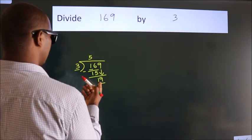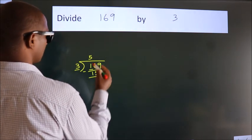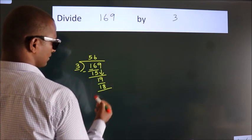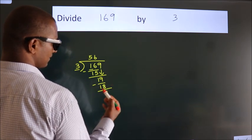A number close to 19 in 3 table is 3, 6, 18. Now we subtract. We get 1.